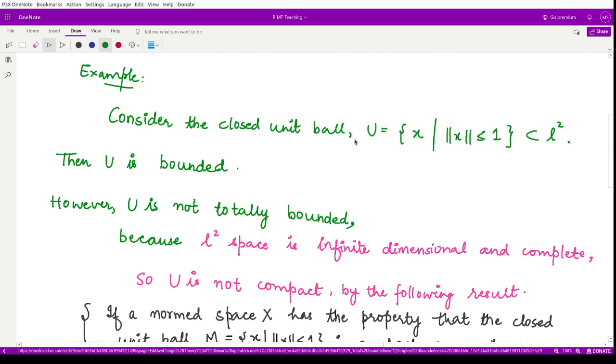Suppose we take a closed unit ball. We take the origin and all points within this ball having radius one - all those x's whose norm is less than or equal to one. This closed unit ball is in the space L2, which is the infinite dimensional space we already know.